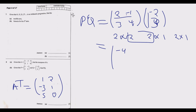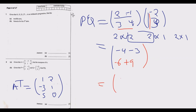Continuing: negative 4 plus negative 1 times 3 equals negative 3, giving a first entry of negative 7. For the second entry: 3 times negative 2 equals negative 6, plus 3 times 3 equals positive 9, giving 3. So PQ equals the column vector with entries negative 7 and 3. That is how you answer questions 7 and 8.